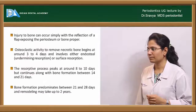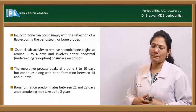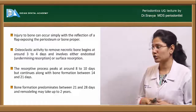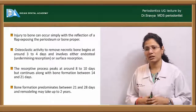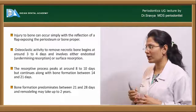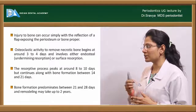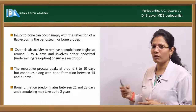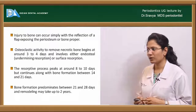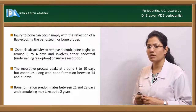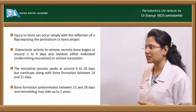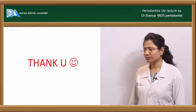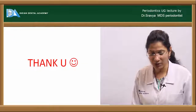If there is injury to the bone, it initially starts with necrosis or resorption of the bone. Osteoclastic activity begins around 3–4 days, reaching a peak at 8–10 days. Bone formation follows from days 14–21, predominating between days 21–28. Complete remodeling takes about two years.